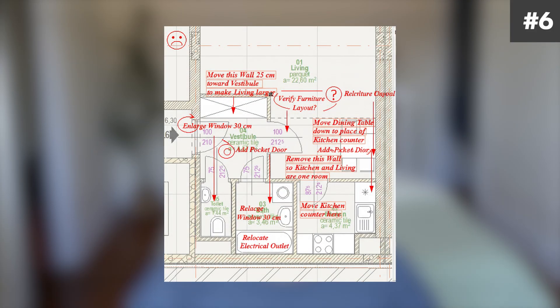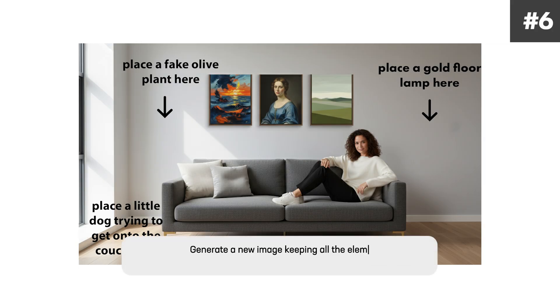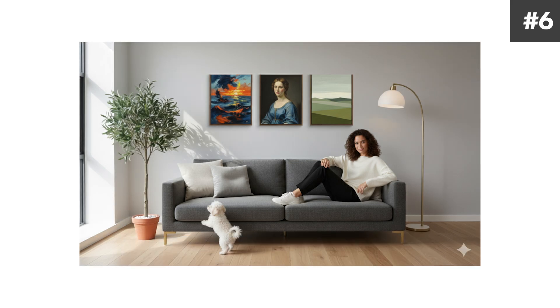But this next one really blew my mind. You guys ever get red lines from your direct supervisor with arrows saying fix this, put this here, put this there? Well, AI can do that for you now. I have this same image and I wanted to add a gold floral lamp to the right, a fake olive plant to the left, and a little dog trying to get onto the couch down below. I told Nano Banana to generate a new image keeping all the elements in the photo while also adding elements using the directions provided in the image. It's got the gold floor lamp, the little dog, the olive tree. You can make annotations on any image and it will basically do it for you.